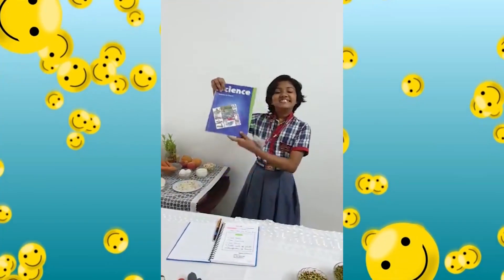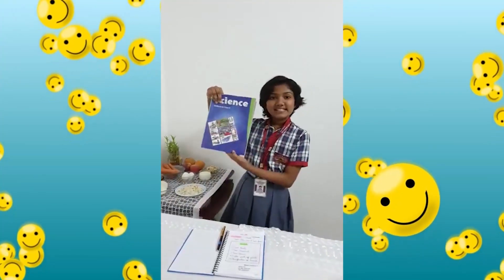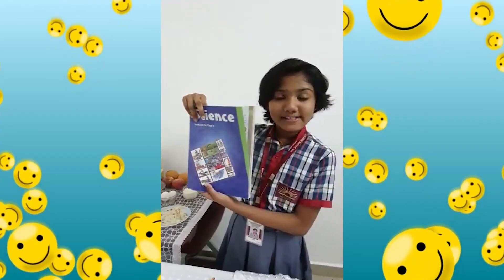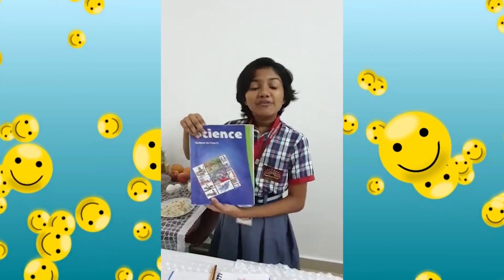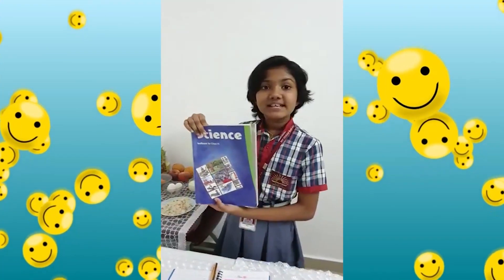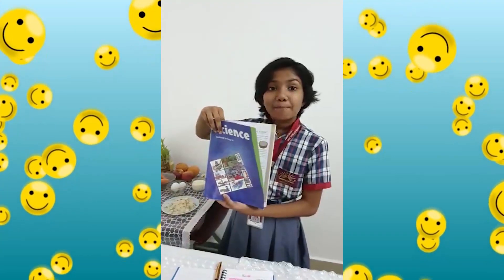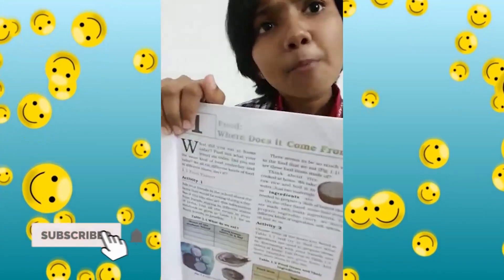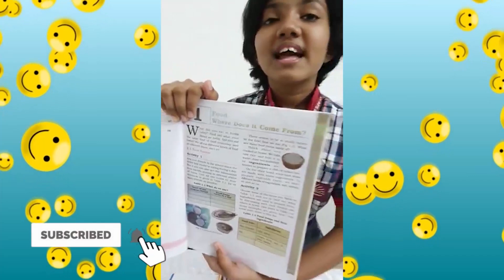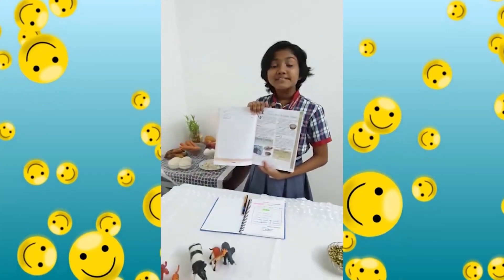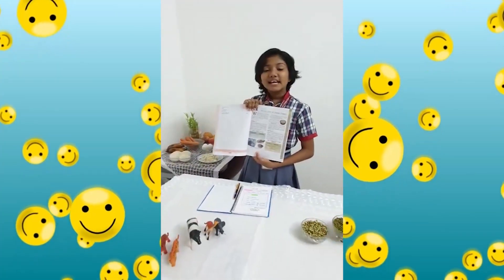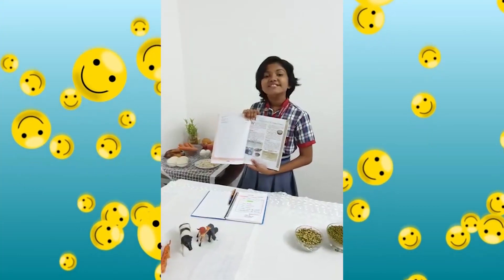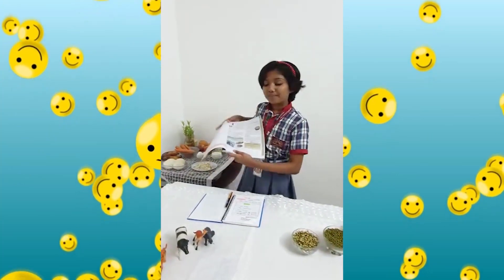Hi friends, this is our science textbook of class 6 in CIT pattern. I would like to discuss about our first chapter, that is Food: Where Does It Come From? My name is Annalishmi Jaya and I am studying in class 6 and I am a student of EV AFS Acula.